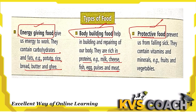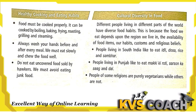Protective food prevents us from falling sick. These foods contain vitamins and minerals — for example, fruits and vegetables. Protective foods increase the immunity of our immune system so we cannot get sick easily from the environment, viruses, or bacteria. Next is healthy cooking and eating habits.